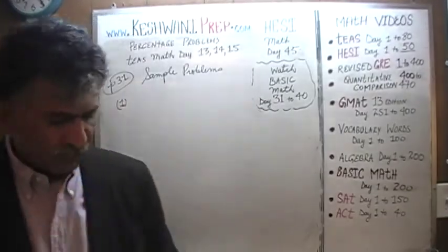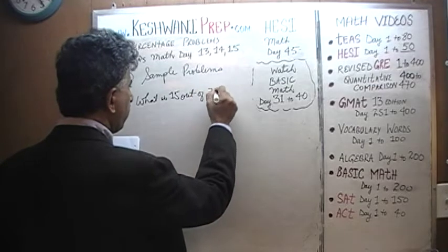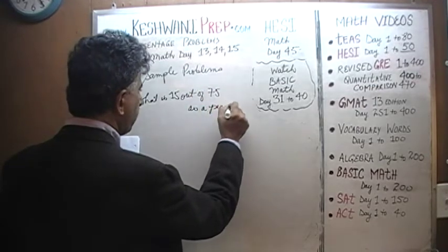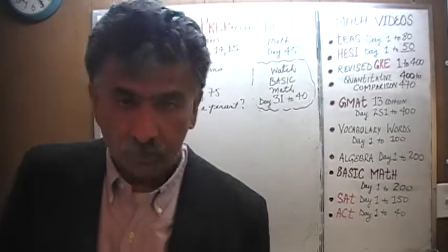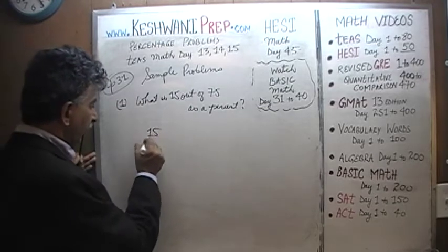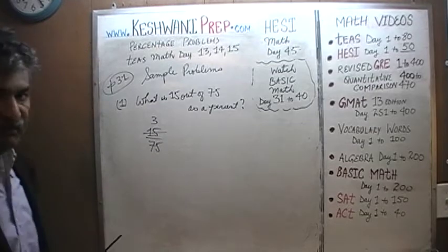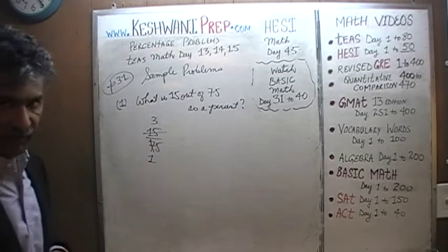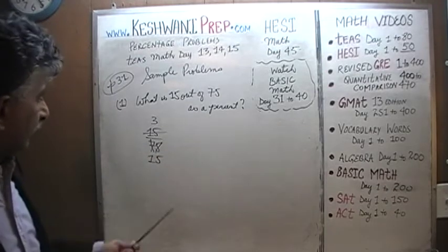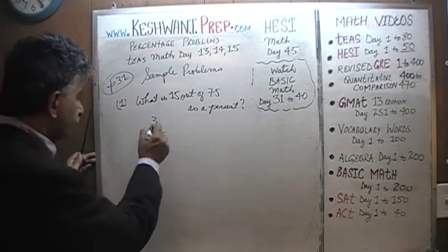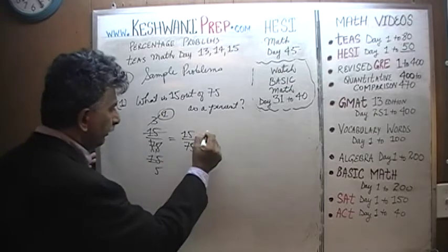Let's get going. The first question asks: what is 15 out of 75 as a percent? We can look at it simply as the fraction 15 over 75. Let's divide top and bottom by 5: 15 divided by 5 is 3, and 75 divided by 5 is 15. Now divide top and bottom by 3: 3 divided by 3 is 1, and 15 divided by 3 is 5. So 15 out of 75 is the same as 1 over 5.